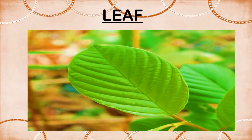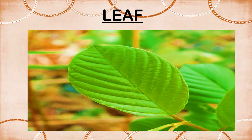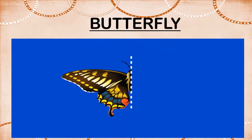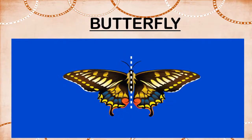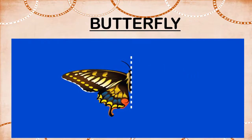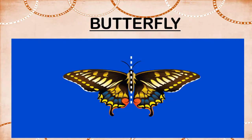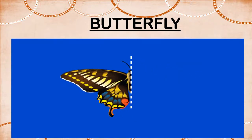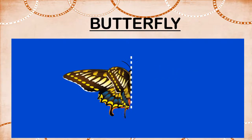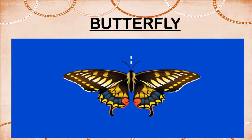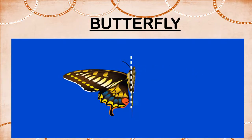Children, what do you see in this picture? Yes, this is a leaf. When we fold the leaf along the midrib of the leaf, the parts on both sides of the midrib appear to be the same. In such cases, we say that the parts are symmetrical about the given line. Children, you can see the picture of a butterfly and the dotted line is called the line of symmetry. The fold along the dotted line in the butterfly divides it into two parts which makes the parts look the same. So, the butterfly is symmetrical with respect to this line.